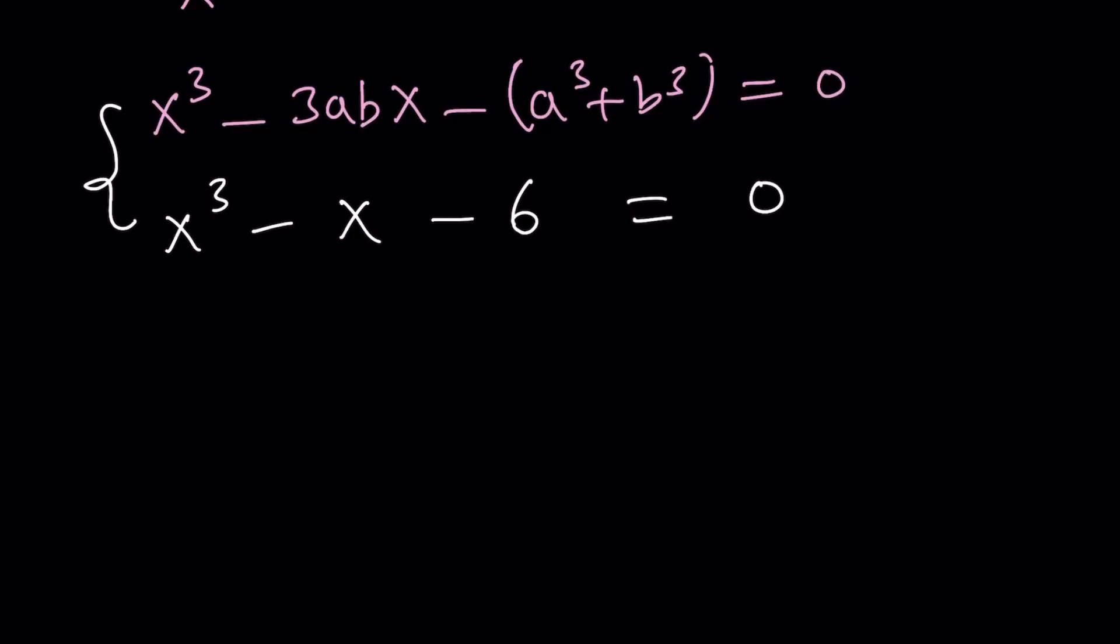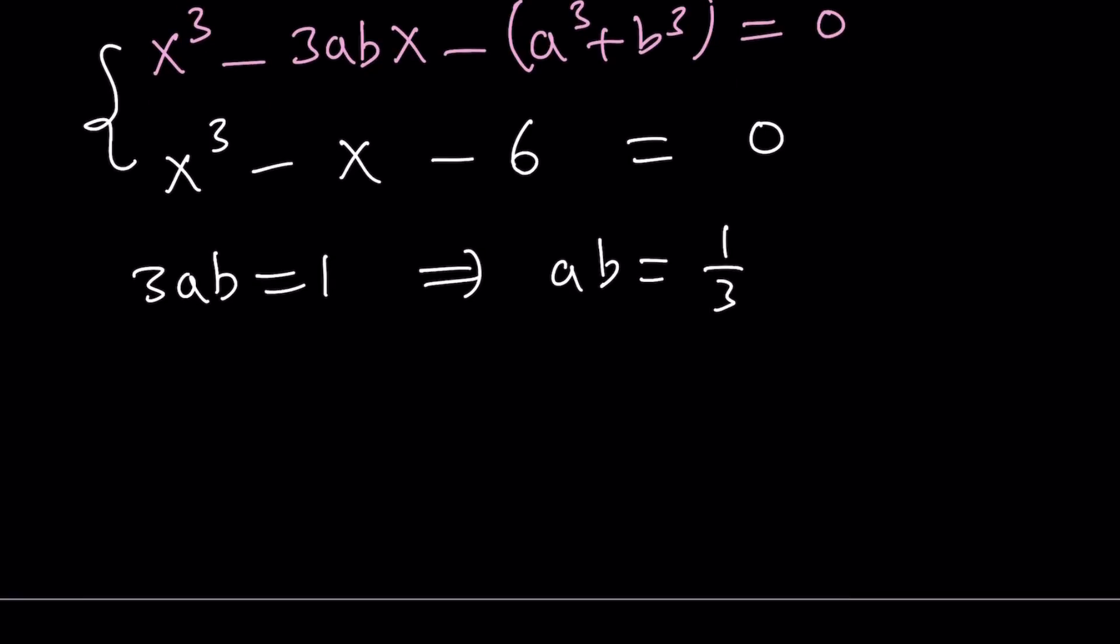So I'm going to compare these two equations. And while I compare them, I notice that the coefficient of x is negative 1 or negative 3ab. So they're going to be equal to each other. From here, I get 3ab equals 1, which means ab is equal to one-third. And what about the constant term? I do see an a³ plus b³ with the minus sign. I do see a 6 with the minus sign. Therefore, they're equal. So I can write it as a³ plus b³ is equal to 6.